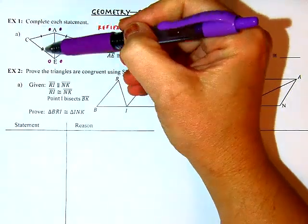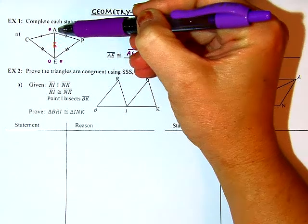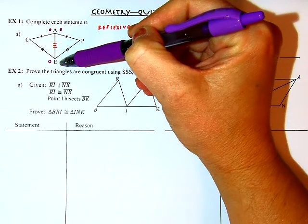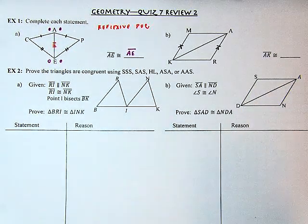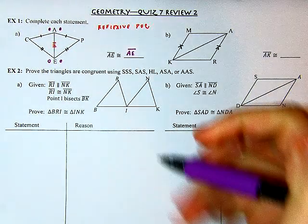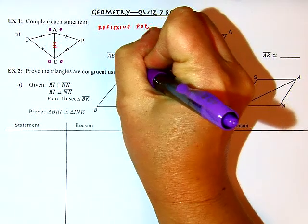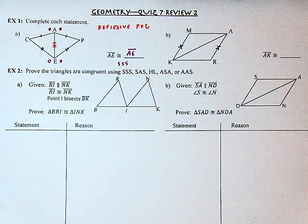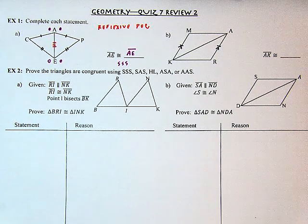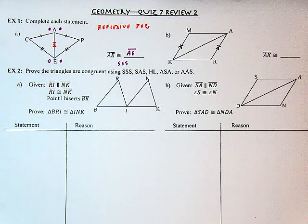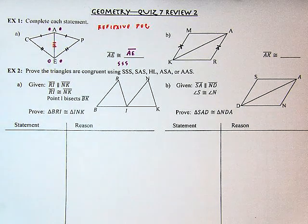If we were writing a proof, our reason here would be side-side-side, because linking up that common side is the third side we needed to have the side-side-side combination.